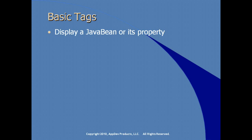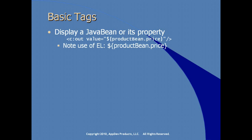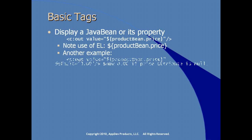From the core JSTL tag library, we can display a Java bean or its property. It's quite common to use the out tag from the core tag library, setting the value attribute to whatever you want written out in the output stream generated by your JSP. Note the use of the expression language — the dollar sign reference to a product bean instance name and the value price. You can also specify an optional default attribute to use if the price attribute is null.